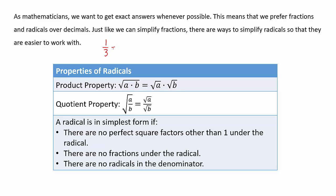Because when we get something like 1/3 and we change it to a decimal, which is 0.3 repeating, if we use 0.3 repeating and round it to two decimal places and start working with it, we've created some error in our problem because we're not actually using the true value, which was that fraction.